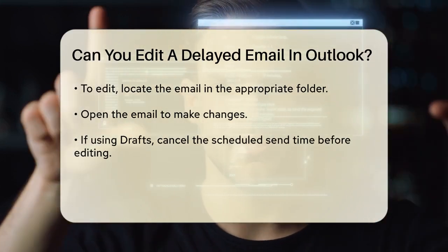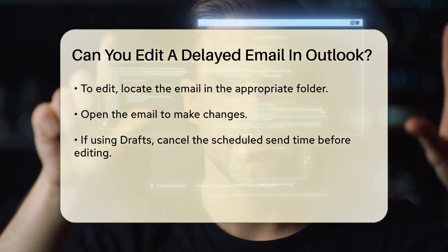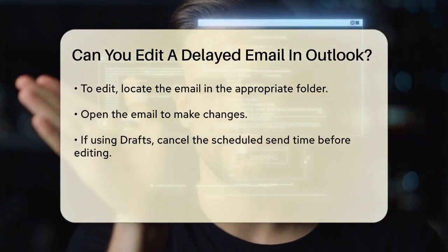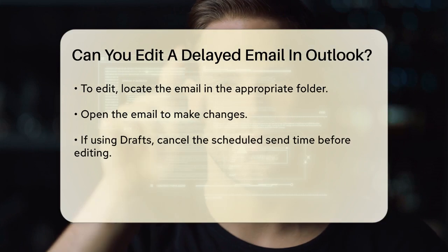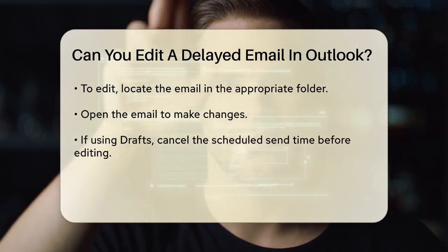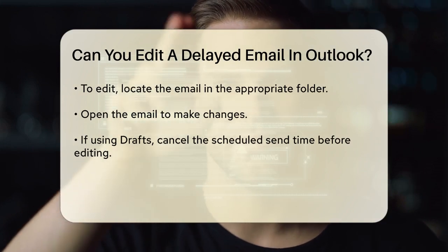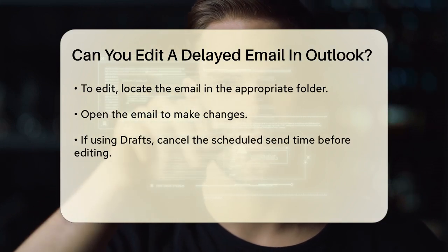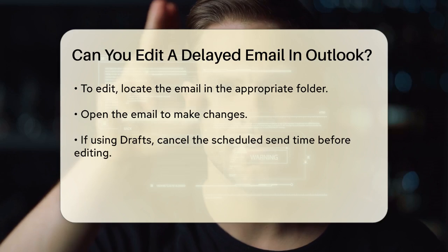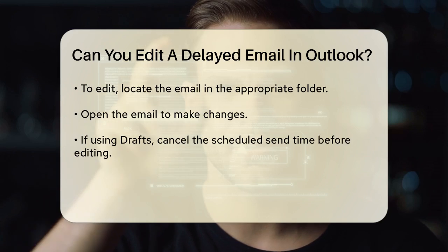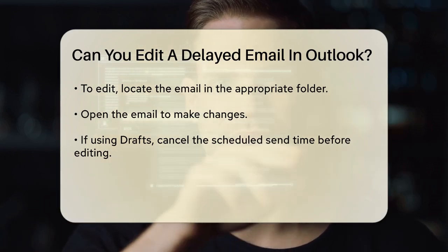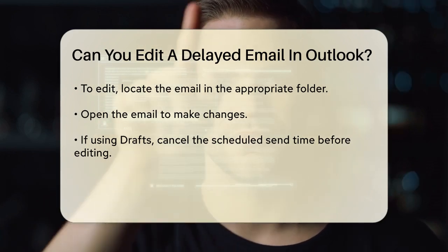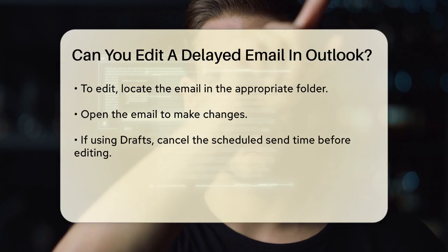For example, if you're using the desktop version on a PC, go to your Outbox folder. Here, you can open the email and make any necessary changes. After editing, you'll need to confirm the delayed delivery by clicking Send again or adjust the scheduled send time as needed.